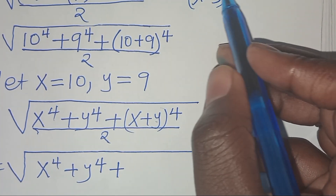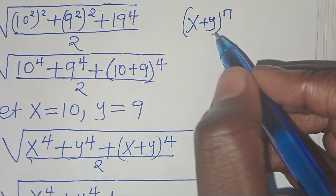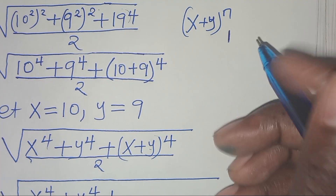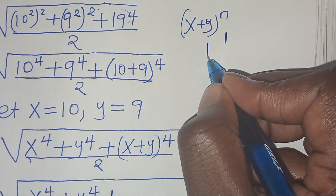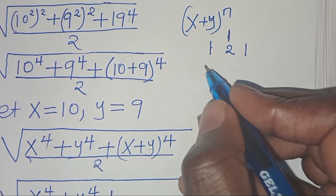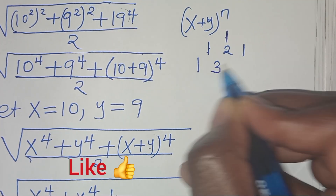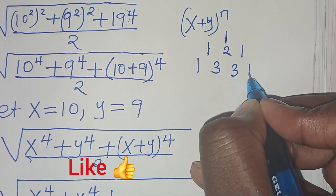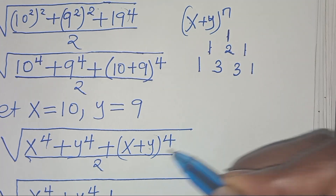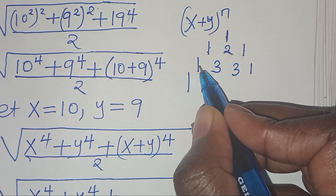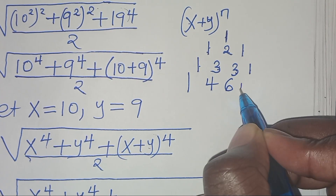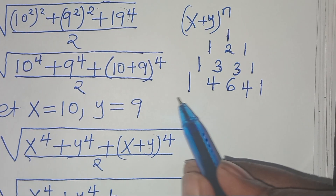That is, if we have x plus y raised to power 1, the coefficient is 1. If it's raised to power 2 we have 1, 2, 1. If it's raised to power 3 we have 1, 3, 3, 1. If we have x plus y raised to power 4, we'll have 1, 4, 6, 4, 1. So these are the coefficients that we use.